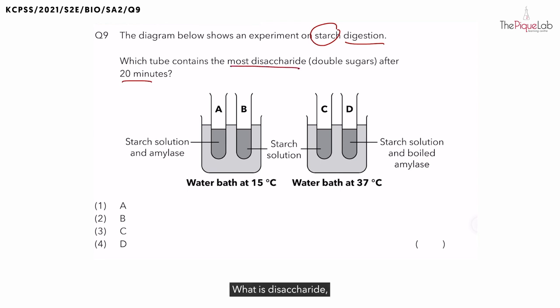What is disaccharide? And why do you have it suddenly appearing after 20 minutes? Now to help us, let's do a quick scan of the setup. You have starch in all the test tubes and you have amylase in test tube A and test tube D. What is amylase? Now since it ends with A-S-E, it is an enzyme. And what do you think amylase digests? Amylase digests starch.